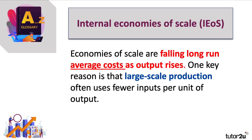Economies of scale are the reduction — the fall in long-run average cost, cost per unit, as the scale of production increases. One key reason is that large-scale production in construction, in beer making, in car manufacturing and so on, often uses fewer inputs per unit of output. So the efficiency of production goes up, hence leading to a fall in unit cost.